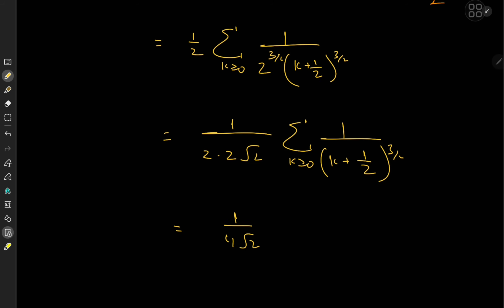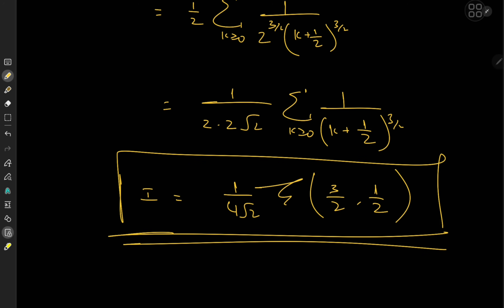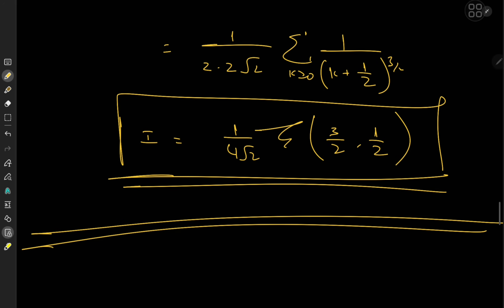The remaining sum is actually a very special function — it's the Hurwitz zeta function, evaluated at s = 3/2 and the shift parameter a = 1/2. The regular Riemann zeta function is just the Hurwitz zeta function with a = 0 (or a = 1). I believe this is the first time on the channel we've invoked the Hurwitz version of the zeta function. I hope you enjoyed the video — this was another addition to my ever-growing list of favorite integrals. Be sure to like and subscribe, and drop me a follow on Instagram. Thank you, see you next time!